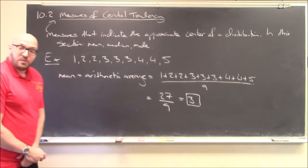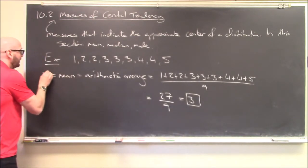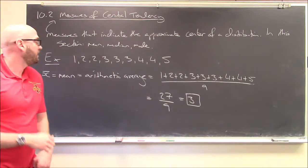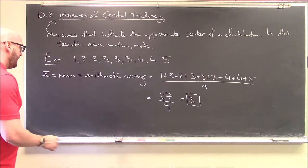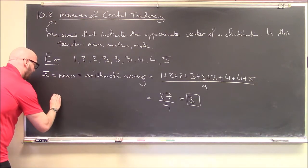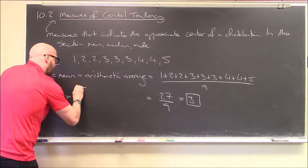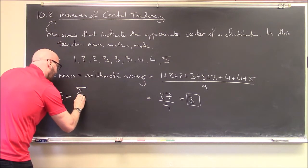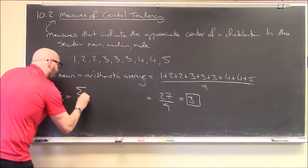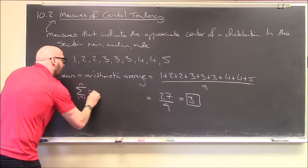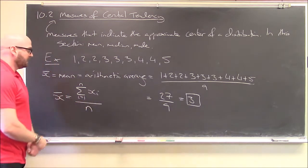There's some notation we often use for the mean. The mean pops up so often in formulas that sometimes you'll see it written as x-bar. The formal formula is: x-bar equals the summation from i equals 1 to n of x sub i, all over n — the number of elements.